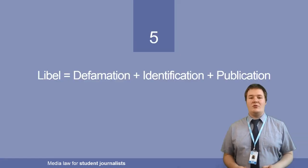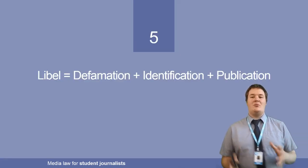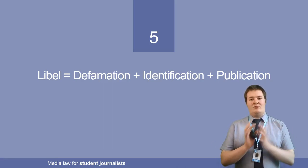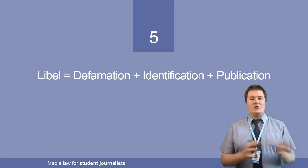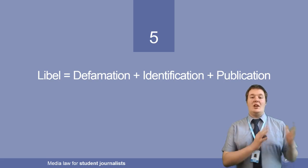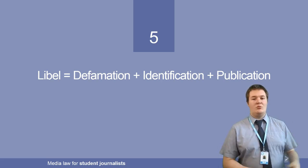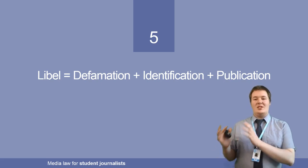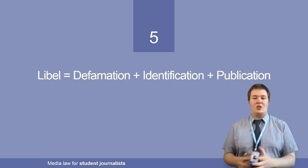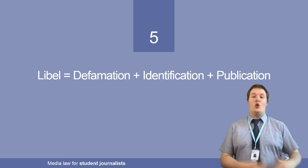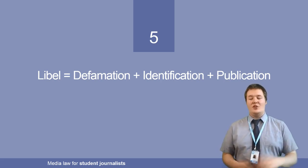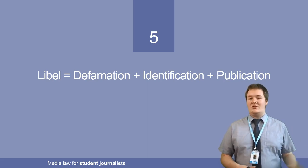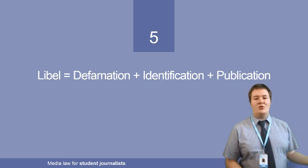It can be any one of those — it doesn't have to be all of them. When people talk about defamation and libel, libel is what people would sue you for. Libel is defamation plus the identification of the person or subject plus the publication of that defamatory statement. Sometimes you will have a defence and it's not libelous, so libel is what people would sue for.